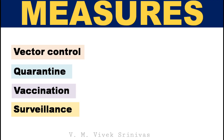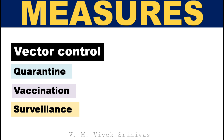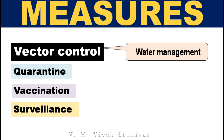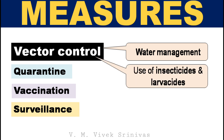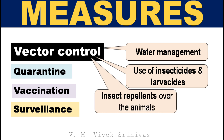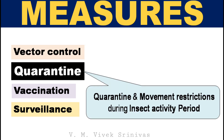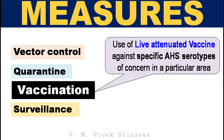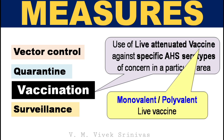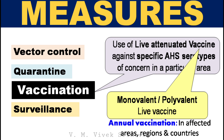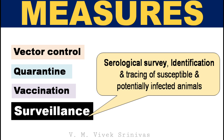Prevention and control. Measures include vector control — primarily water management to reduce Culicoides breeding sites, use of insecticides and larvicides by spraying over breeding areas, and dipping of animals in insect repellents. Quarantine and restricted susceptible animal movement during insect activity periods. Vaccination using live attenuated vaccine against specific African Horse Sickness virus serotypes of concern in a particular area; monovalent and polyvalent live attenuated vaccines are available, and annual vaccination is followed in affected areas. Serological surveillance and identification and tracing of susceptible and potentially infected animals.